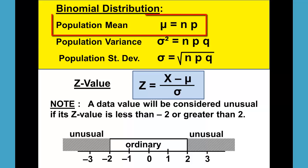To do so, we'll start with the population mean. The population mean, mu, is equal to n times p.